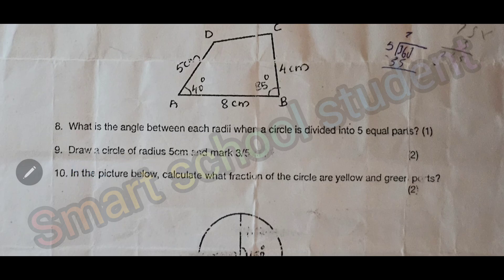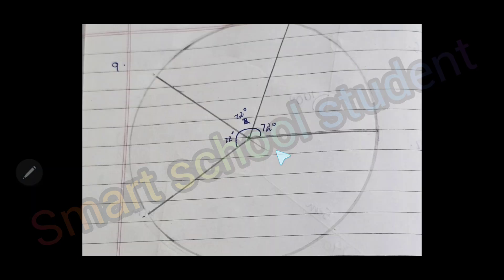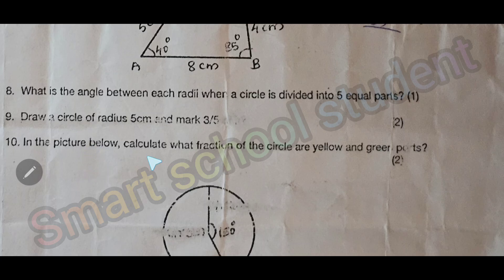Question 9, Christian drew a circle of radius 5 cm and mark 3 by 5 parts.